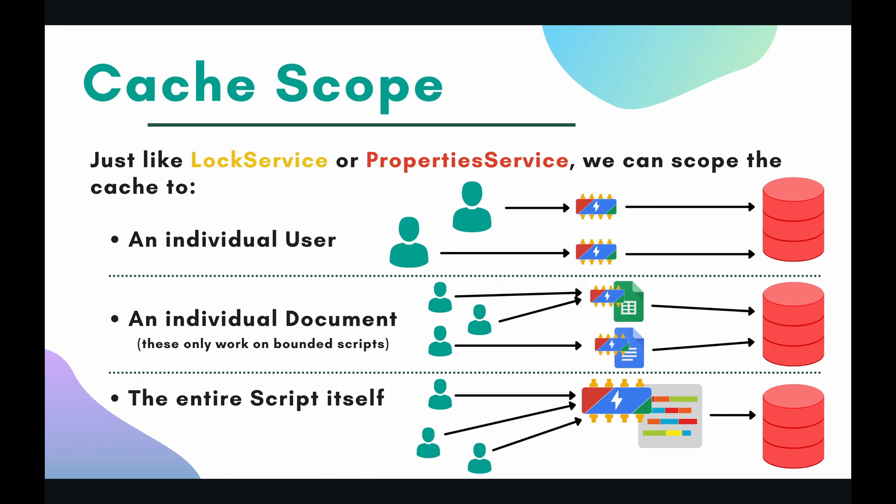Next we have the entire script itself. This is the most public of all of the caches, and it's really good if you have non-sensitive data, that public data. For instance, in the last episode we talked about the New York Times - that is definitely public data, like today's article. This cache lives on the entire script itself, so anybody accessing that script will have access to the same data. This is really good for just the public data, and we are going to use that a lot.